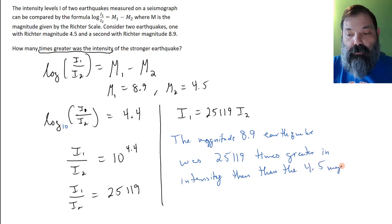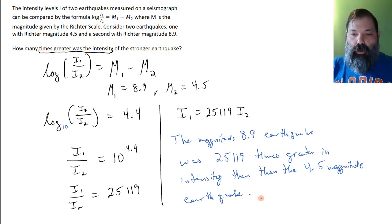Then the 4.5 earthquake. If we move on a logarithmic scale, which the Richter scale is, each time we increase the magnitude by 1, we're really affecting the intensity by a factor of 10.